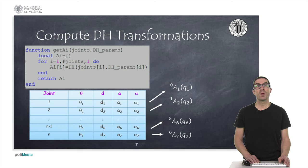Now, we will implement an auxiliary function that allows us to obtain a Lua table with all the transformation matrices associated with joints. As it can be seen, the function stores in a table AI the transformation matrices that the DH function returns. In each iteration of the loop, joinHandle and the corresponding row of the full table of Denavit-Hartenberg parameters need to be provided.